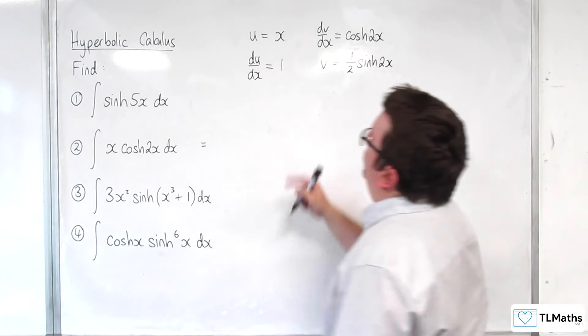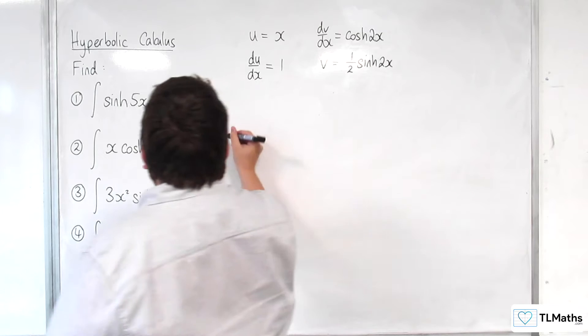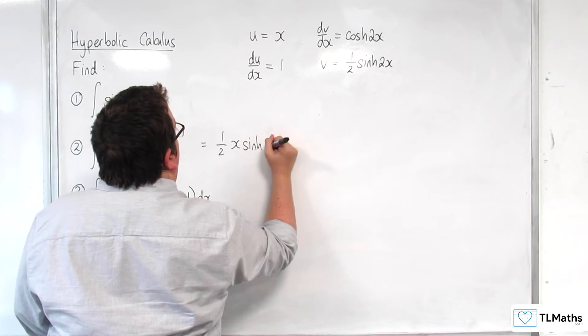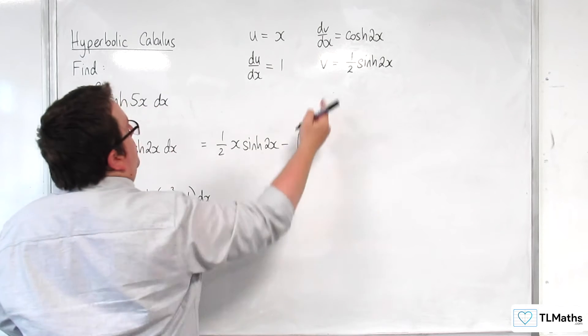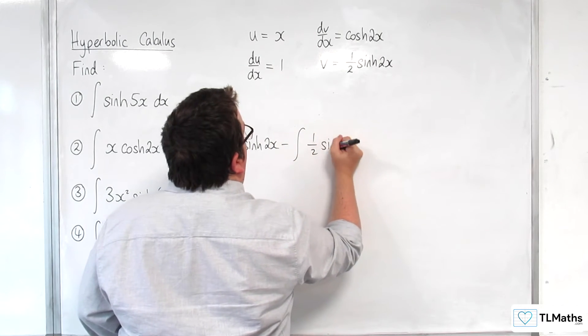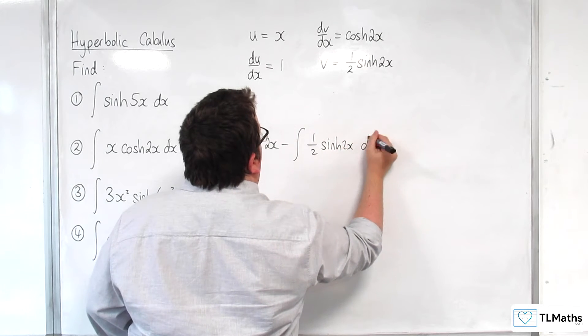So this would be equal to u times v. So one-half x sinh 2x, take away the integral of v times du/dx. So one-half sinh 2x dx.